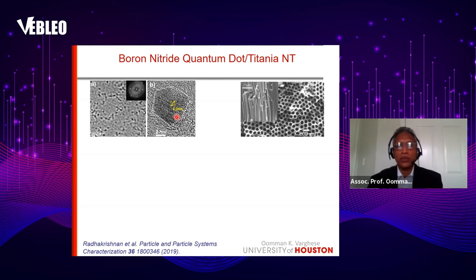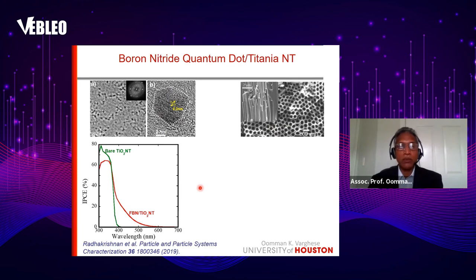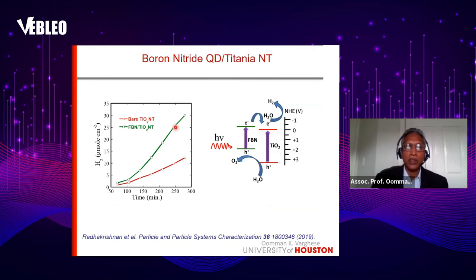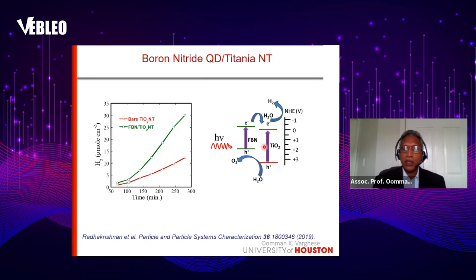This was also done in collaboration with Rice University. Quantum dots of a few nanometer size were used for sensitizing the titanium dioxide nanotubes. We found a remarkable increase in quantum efficiency in the visible region — up to around 25%. With this wide band gap, stable material, we could increase the quantum efficiency and increase hydrogen generation in the titanium dioxide nanotube. Our studies showed that the band positions — especially the conduction band of the titanium dioxide nanotube and the boron nitride quantum dots — were appropriate for transfer of electrons from the quantum dots to the titanium dioxide nanotubes.